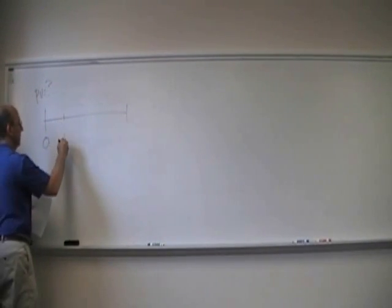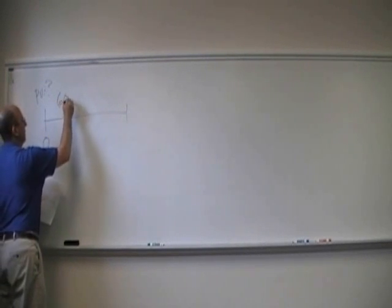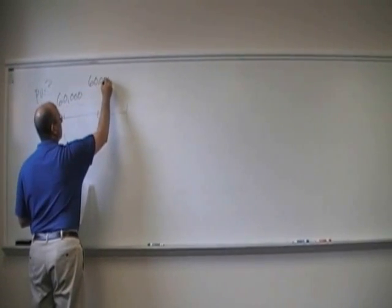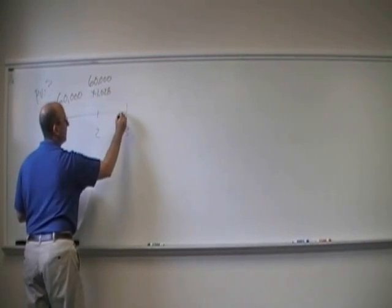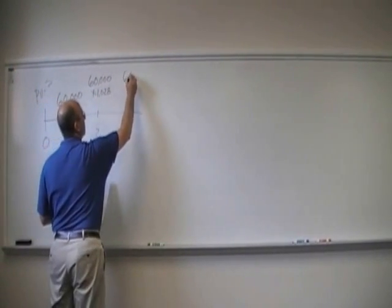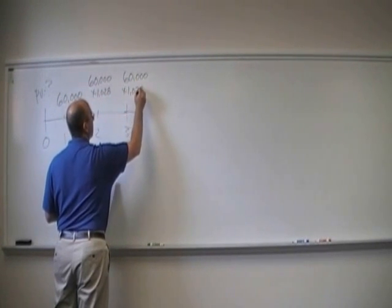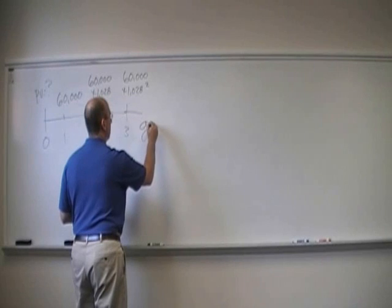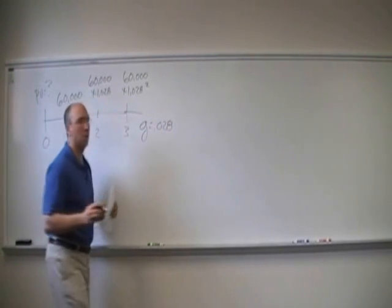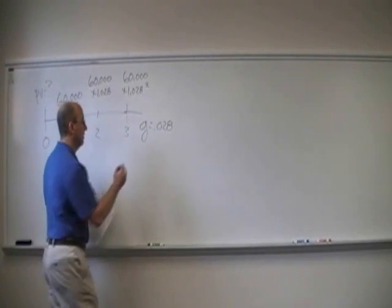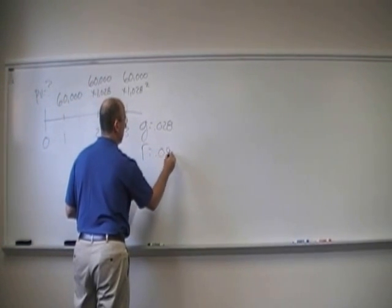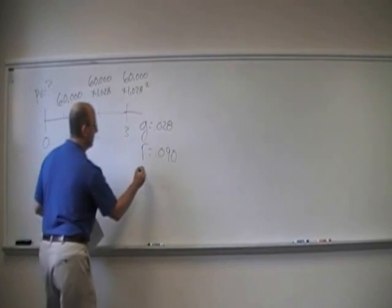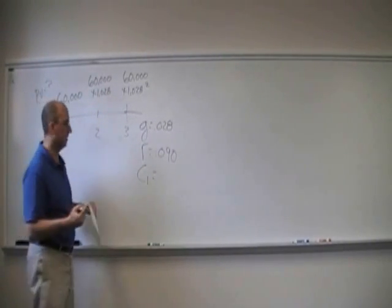We want to know the present value. We know that in one year we get $60,000; in two years, $60,000 times 1.028; in three years, $60,000 times 1.028 squared — and the cash flows continue forever. The growth rate is 2.8% per year, the cost of capital is 9%, and C1, the cash flow expected one period from now, is $60,000.